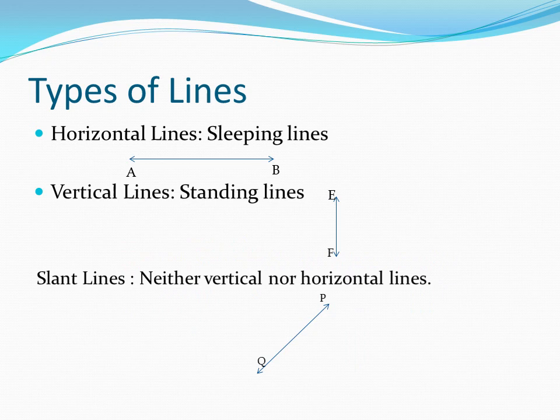Next, types of lines. There are three types of lines: horizontal lines, vertical lines, and slant lines. You have to read those spellings and keep them in mind. Horizontal lines are nothing but sleeping lines — as we used to say in lower class. Standing lines means vertical lines. Slant lines are neither vertical nor horizontal. So there are three types of lines: horizontal, vertical, and slant.